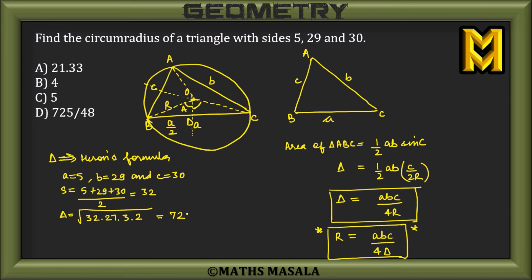So substituting this value of Δ, I have R = (5 × 29 × 30)/(4 × 72). This implies R would be 725/48. So option D would be the correct option.